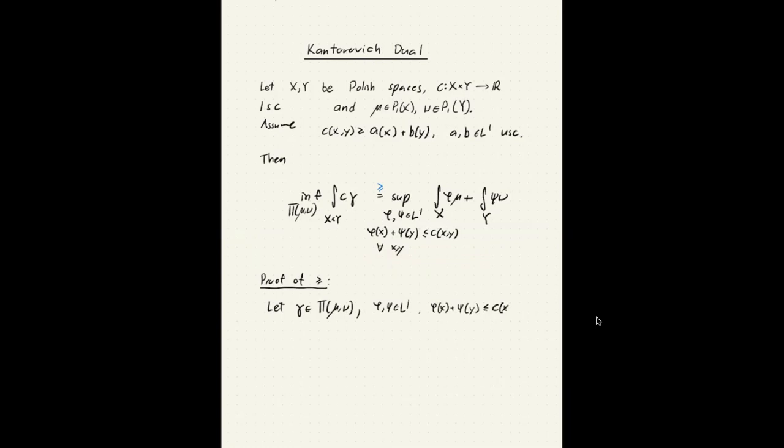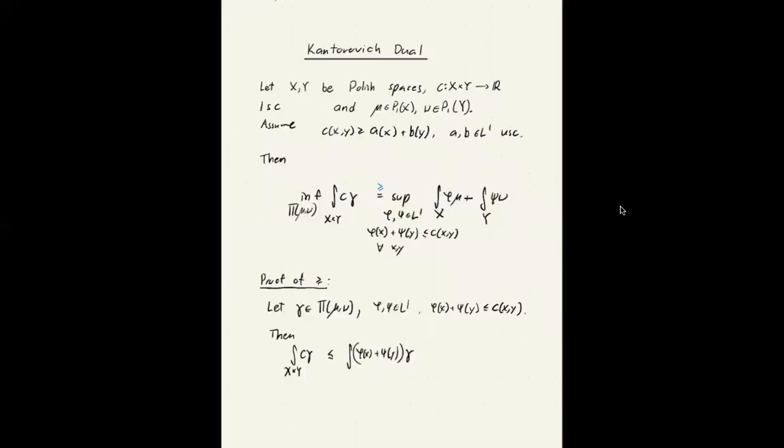Then we check what is the cost of this transport plan. Well, from this inequality here, we get this bounded from above by phi of x plus psi of y integrated against gamma. So what I meant to write is, of course, that this one is larger or equal to this.